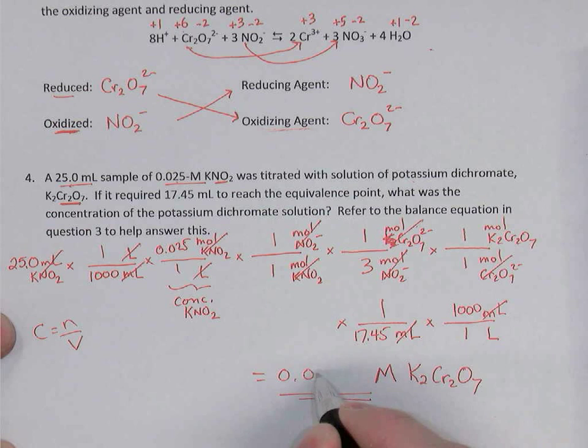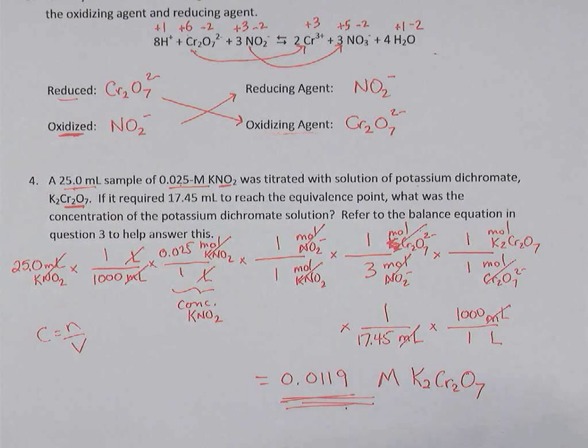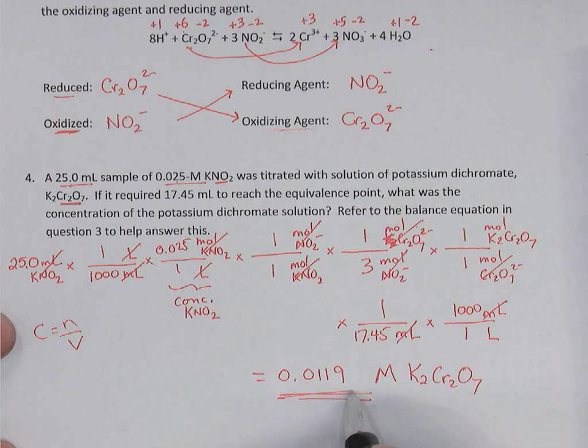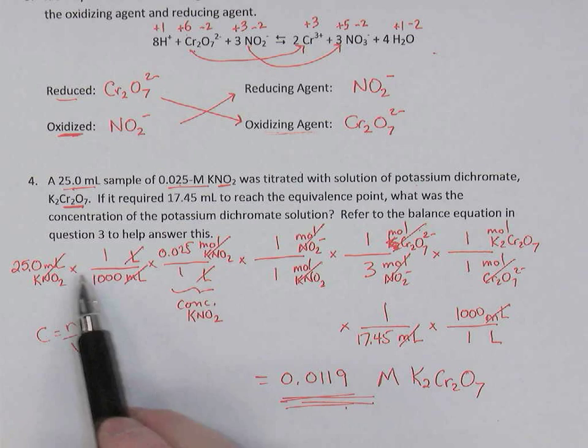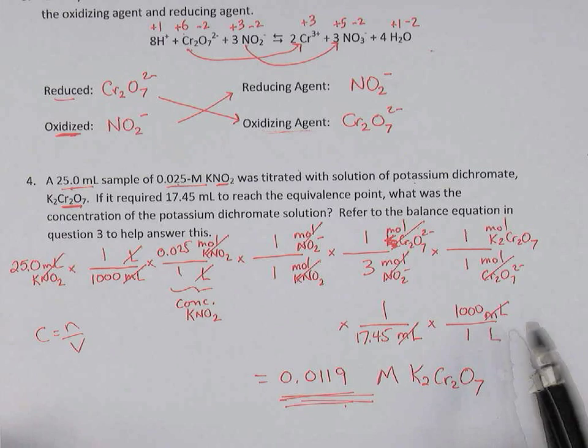You can see that although this was a redox question, at its heart it's still a titration problem — dealing with concentrations and volumes of one substance, then the balanced equation relating one substance to another, and then concentrations and volumes again at the end.